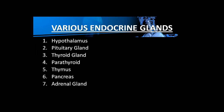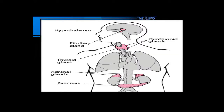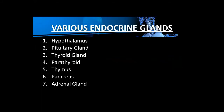Point number six is the pancreas, which has dual characteristics — it functions in both the endocrine system and the exocrine system. It is mostly found below the stomach and above the small intestine. Point number seven is the adrenal gland, found on the upper portion of the kidney. So the various endocrine glands are: hypothalamus, pituitary gland, thyroid gland, parathyroid gland, thymus, pancreas, and adrenal glands.